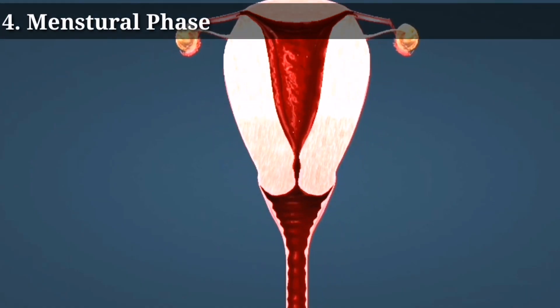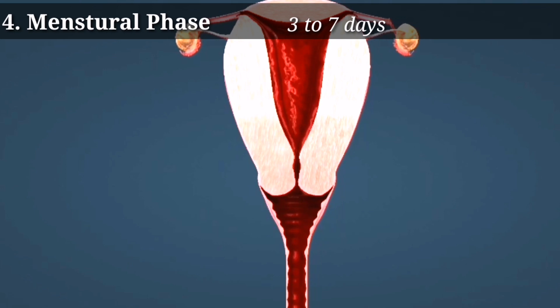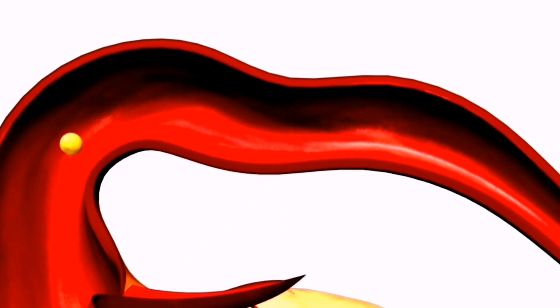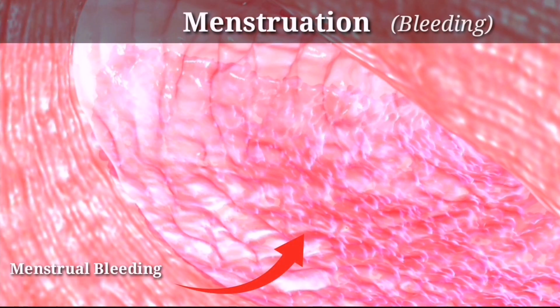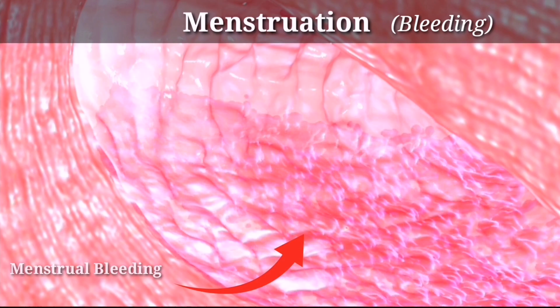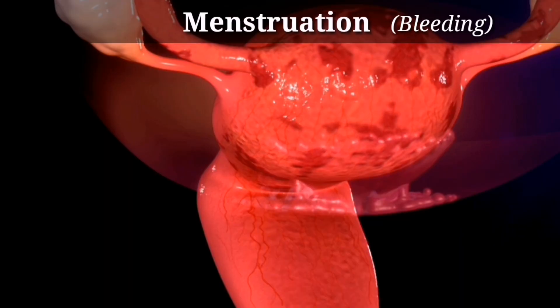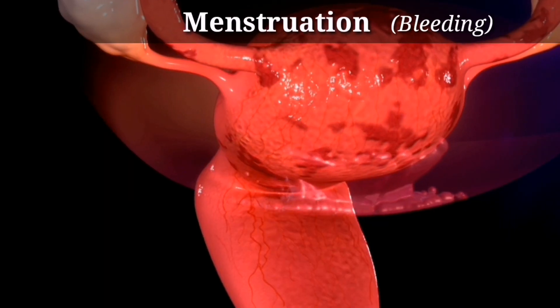The menstrual phase is the final stage and lasts for around 3 to 7 days. During this phase, if the egg is not fertilized, the uterus sheds its lining and this results in bleeding. This bleeding is what is commonly referred to as a period.